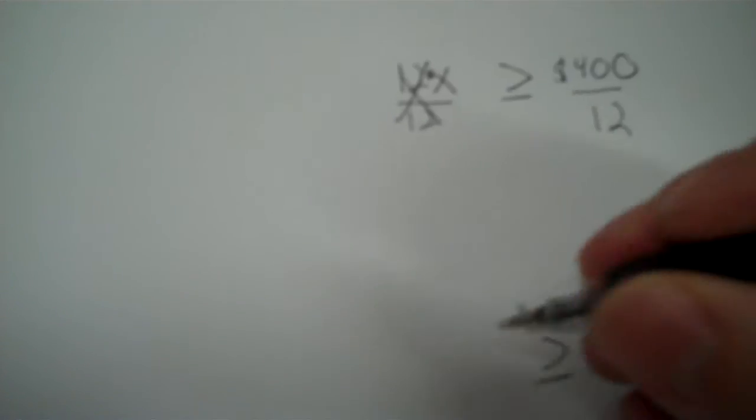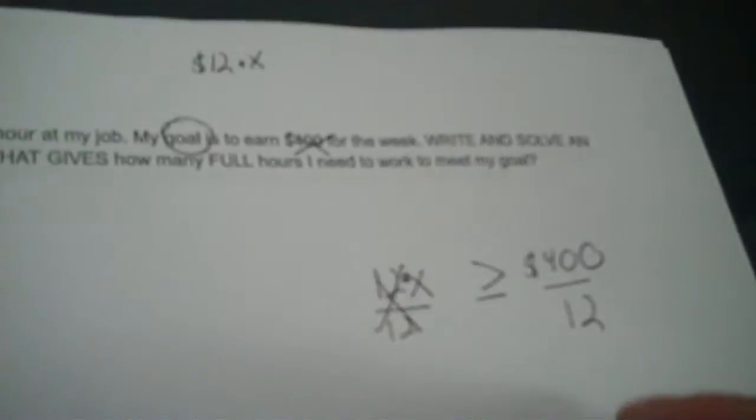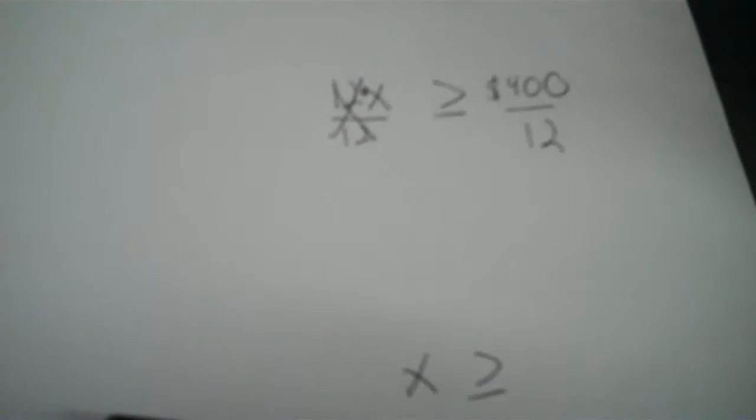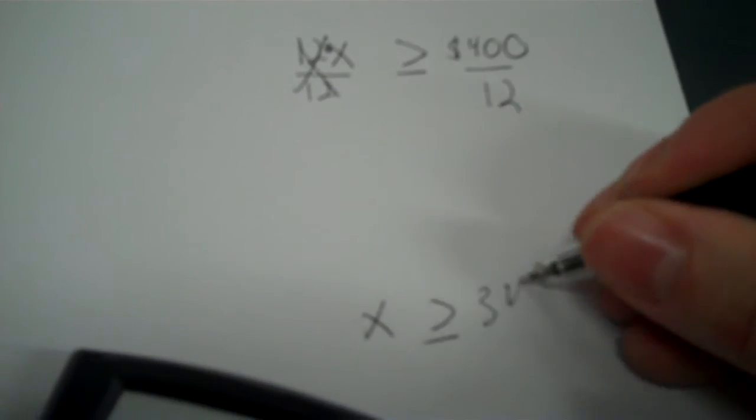You're going to leave the sign the same, and you're going to divide. So I have X, and I take 400 divided by 12, and that's 33.3. Now when the sign points that way — when it opens up towards the X — you need to not put a decimal. You need to put 34. You've got to go up one. One more than 33 is 34.